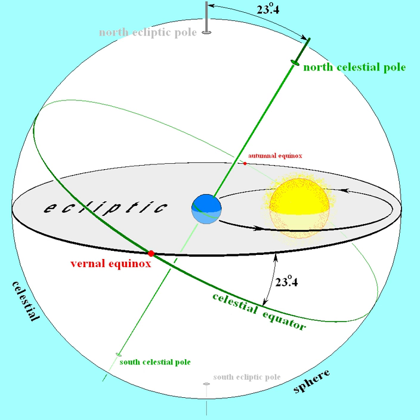The exact instances of equinoxes and solstices are the times when the apparent ecliptic longitude (including the effects of aberration and nutation) of the Sun is 0°, 90°, 180°, and 270°. Because of perturbations of Earth's orbit and anomalies of the calendar, the dates of these are not fixed.